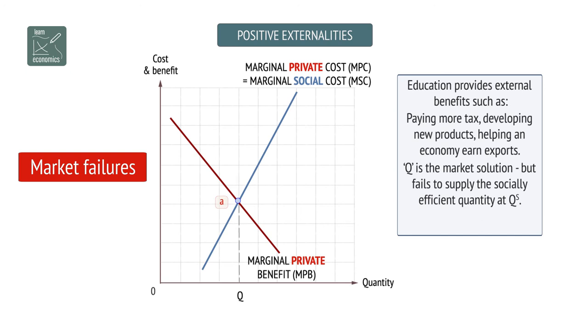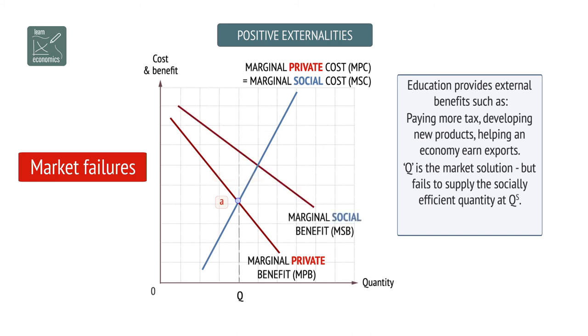External benefits cause the marginal social benefit curve to shift to the right. Net welfare loss is area A, B, C.